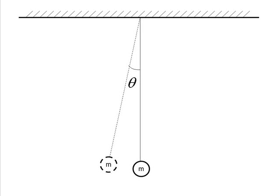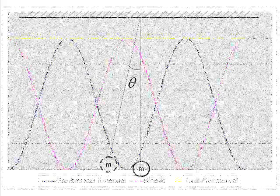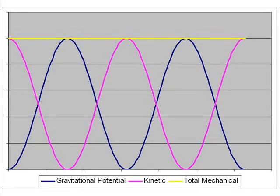A pendulum is set up as a mass on a cable. As the pendulum swings from the highest point to the lowest point, the energy transitions from gravitational potential energy, the blue curve, to kinetic energy, the pink curve.